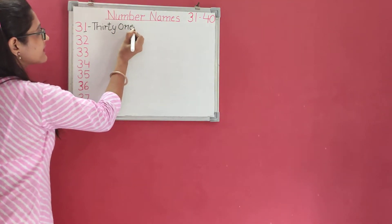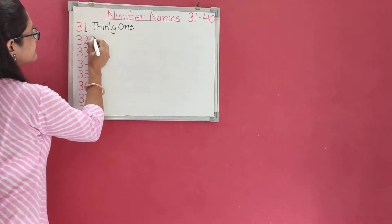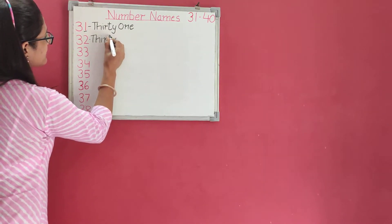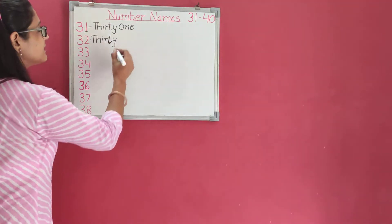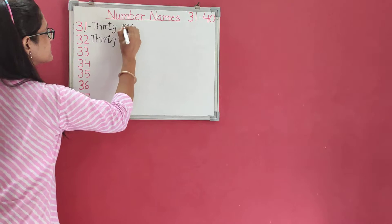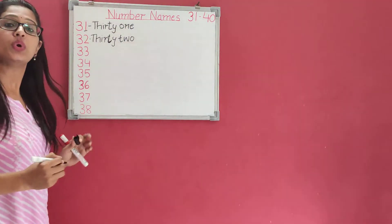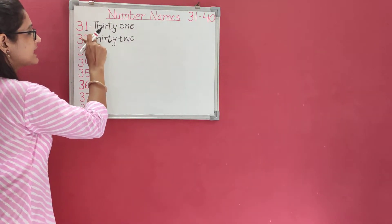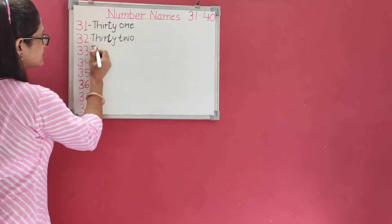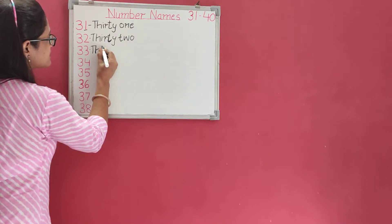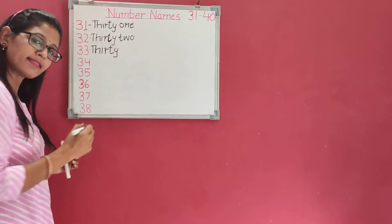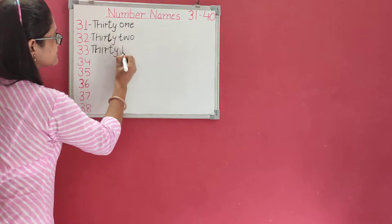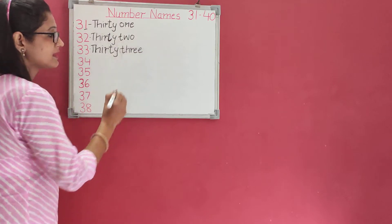Then, T-H-I-R-T-Y, thirty, then T-W-O, two. Thirty-two. T-H-I-R-T-Y, thirty-two. Now, T-H-I-R-T-Y, thirty, T-H-R double E, thirty-three.